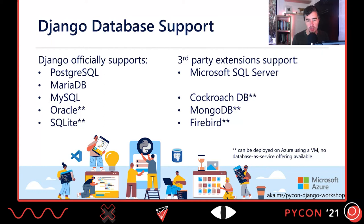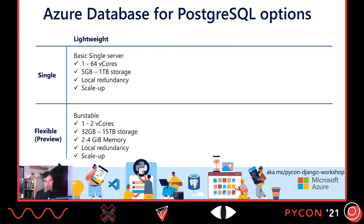For more niche options: you can use Mongo on a virtual machine or Azure Cosmos DB with a Mongo interface using a connector called Djongo. Oracle and SQLite aren't offered as managed services but you can deploy them on a VM. Third-party support also allows Microsoft SQL Server, CockroachDB, MongoDB, or Firebird. But if you stick with the standard path — Postgres, MariaDB, or MySQL — you're less likely to hit edge cases and more likely to find answers when you do.